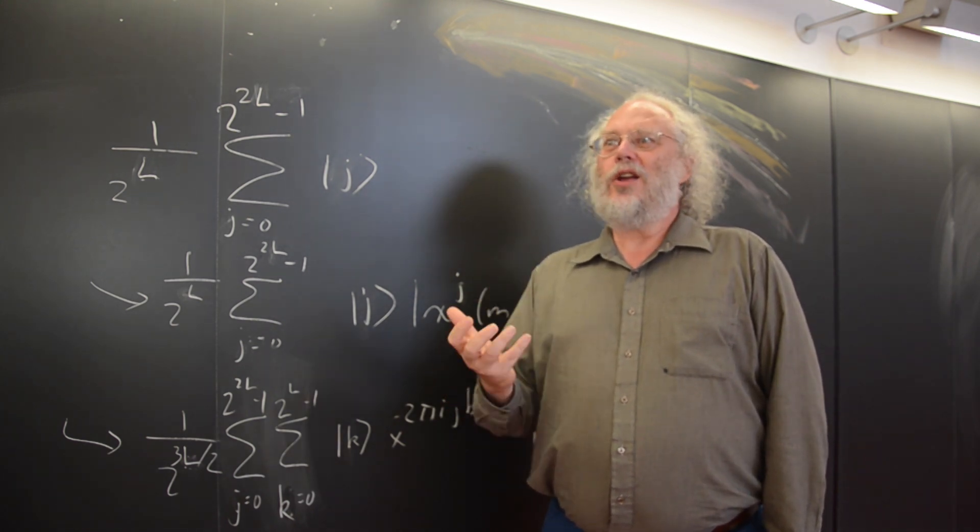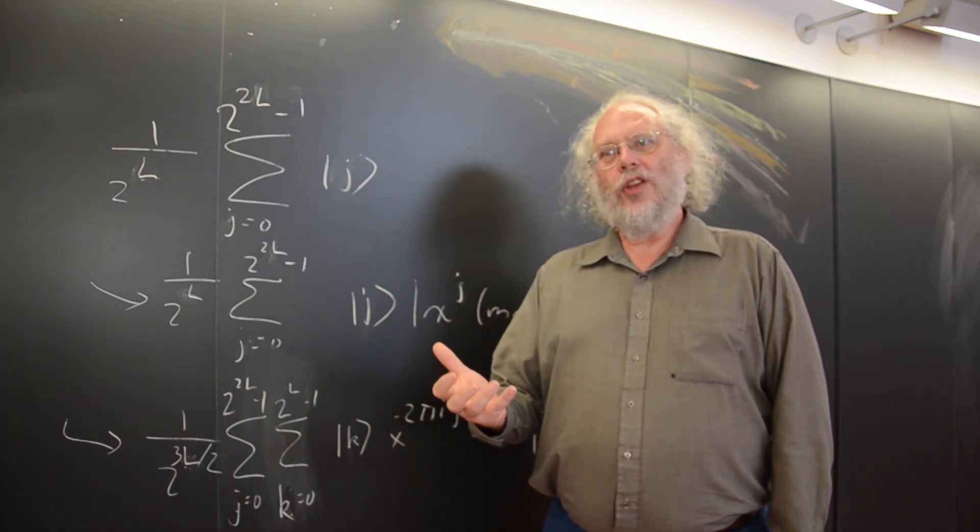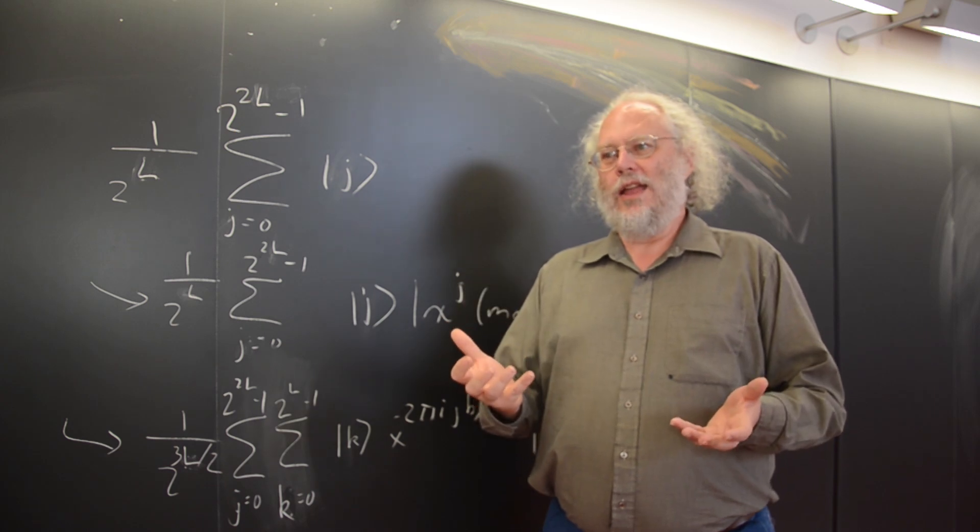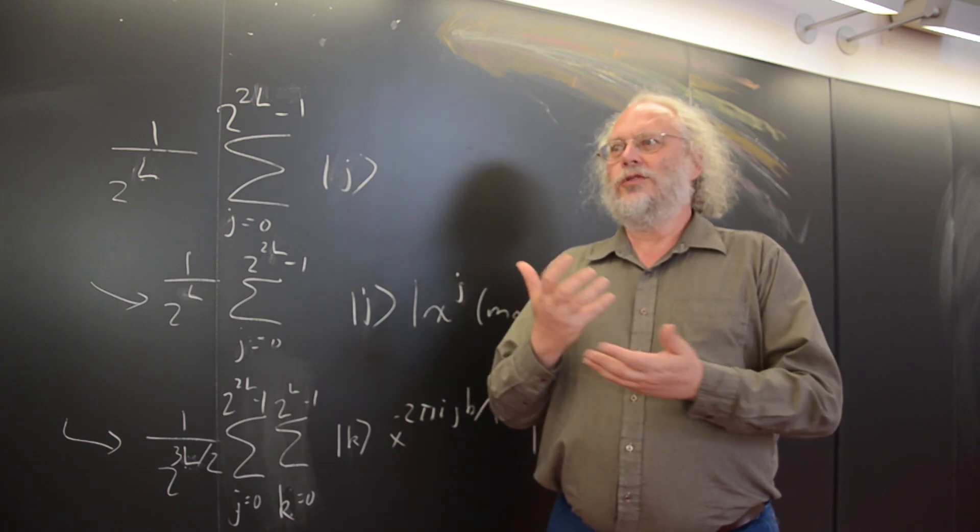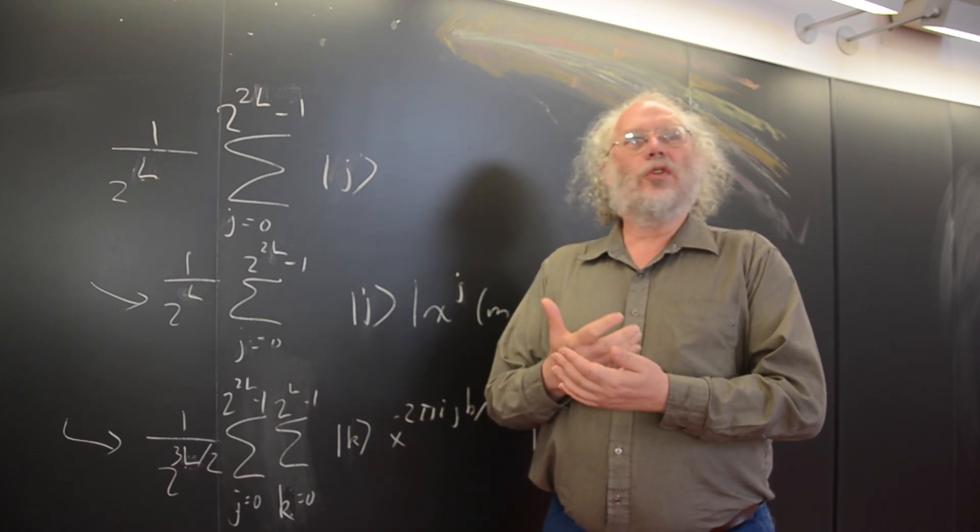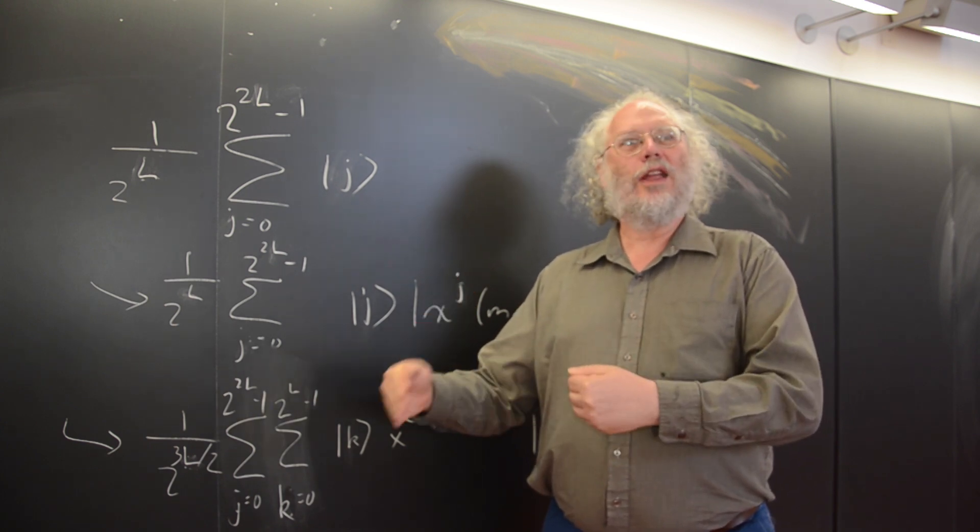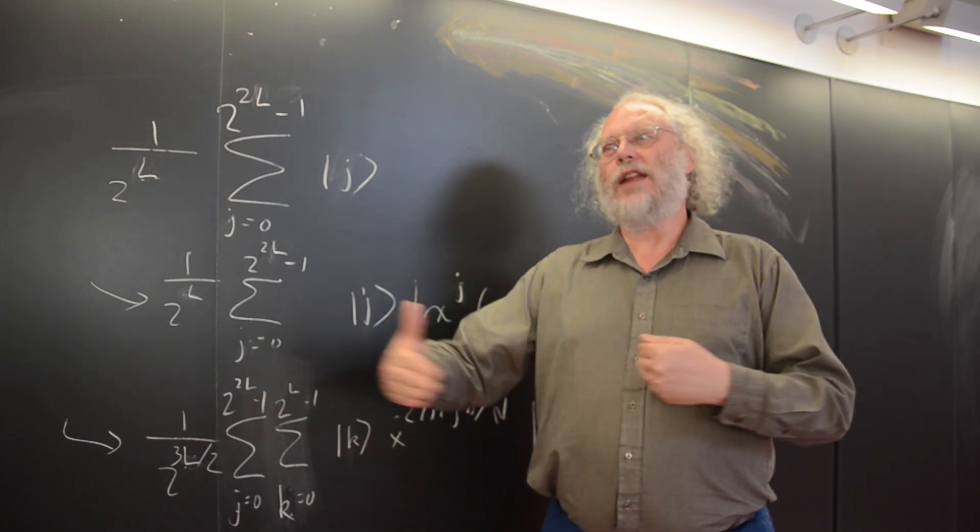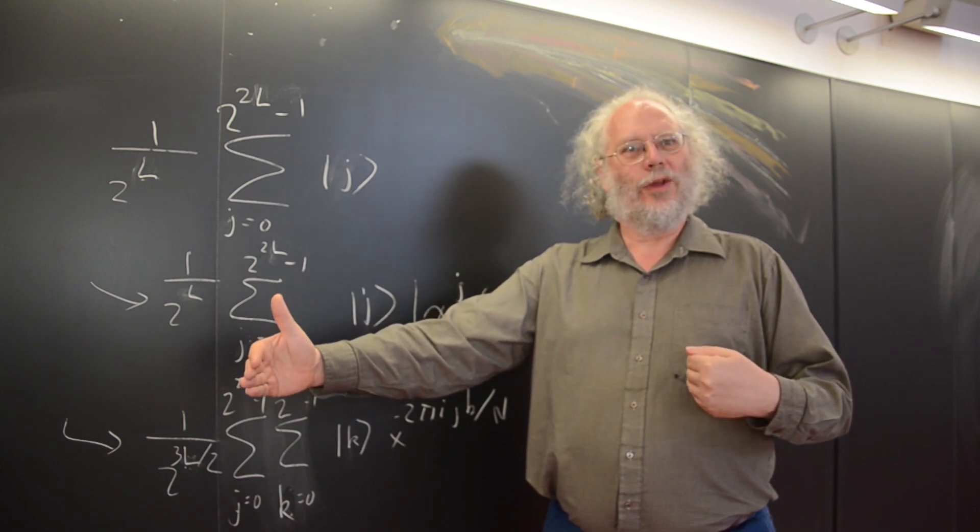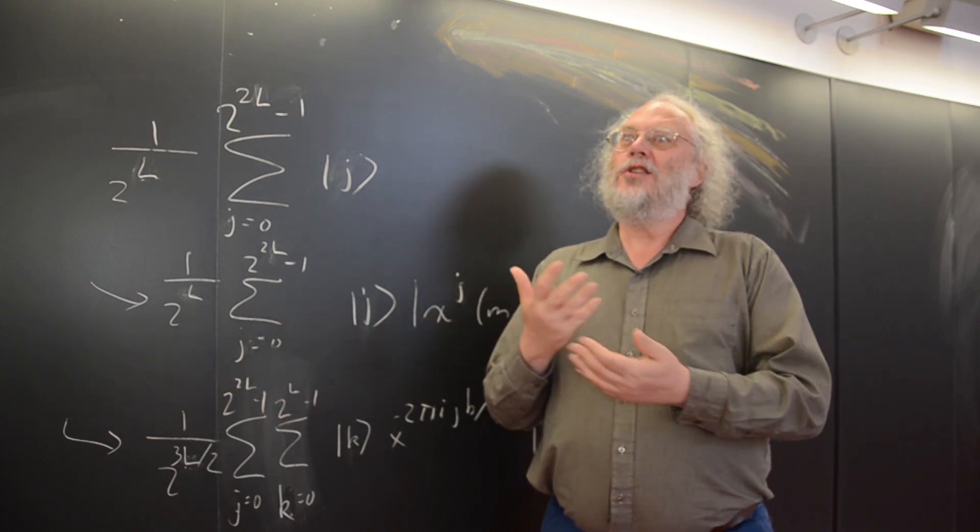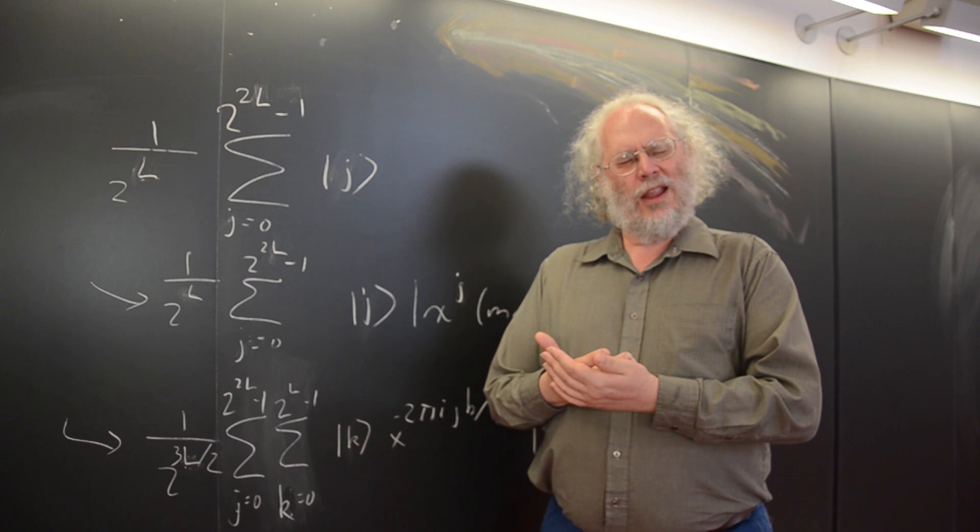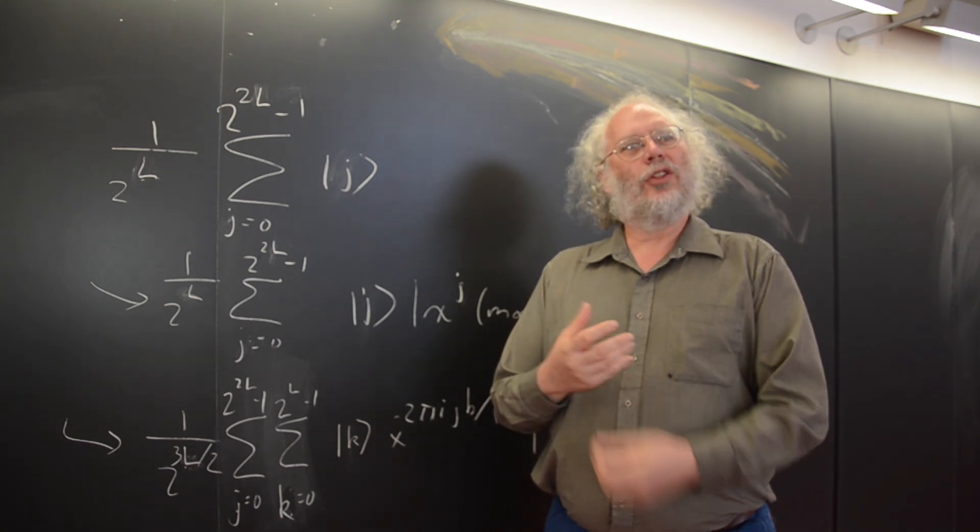So the way the quantum factoring algorithm works is you take the number you want to be factored, and using number theory, you can turn the problem into a problem of finding the period of a really long sequence. And then you use the quantum computer as a computational interferometer.